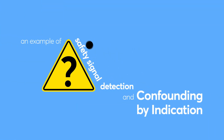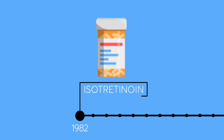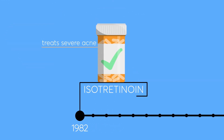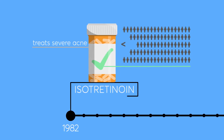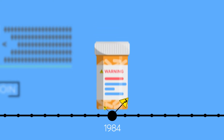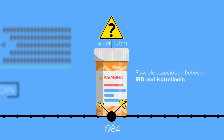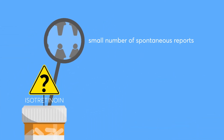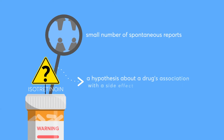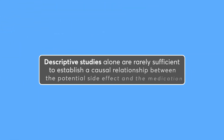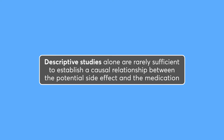An example of safety signal detection and confounding by indication: In 1982, isotretinoin was approved by the FDA to treat severe acne based on clinical trials in fewer than 100 people. Two years later, a warning was added to the package insert about a possible association between inflammatory bowel disease and isotretinoin based on a small number of spontaneous reports associating the drug with the disease. These case reports were interpreted as a safety signal. But remember, a safety signal is a hypothesis about a drug's association with a side effect. Results of descriptive studies alone are rarely sufficient to establish a causal relationship.